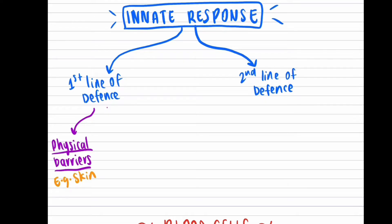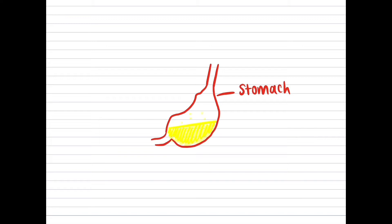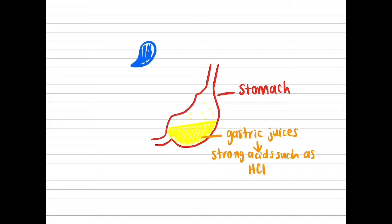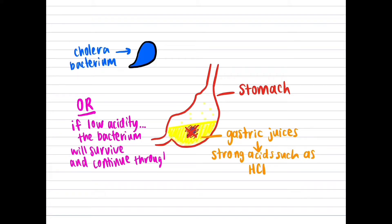This allows for a quick response from the second line of defense. Chemical barriers also attempt to kill the pathogen through chemicals such as those found in mucous membranes, which cover open body tissue and trap pathogens with a viscous and slimy mucus, preventing the pathogen from entering. Relating this to cholera, gastric juices in the stomach including hydrochloric acid will attempt to kill the cholera bacterium, but will fail because lower levels of acidity are not enough to kill the bacterium due to its strong protective capsule. This allows the bacterium to pass through the first line of defense.